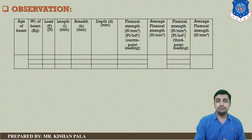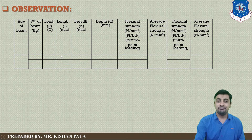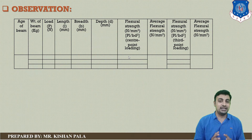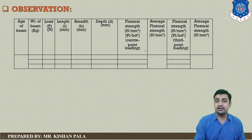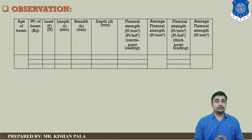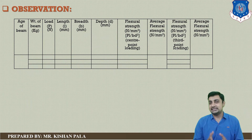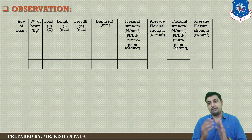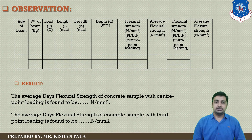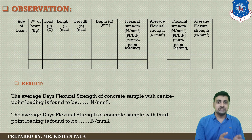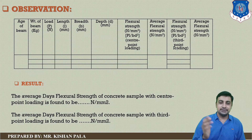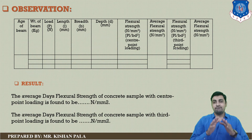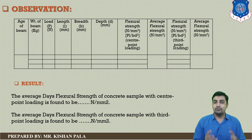Record the total load at which the beam specimen fails, the length of the beam, breadth, and depth. Calculate the flexural strength using the equation PL/bd² for central loading and the corresponding formula for the third point loading system. After calculating, find the average flexural strength for the particular days — 7 days or 28 days — for both central point loading and third point loading systems.